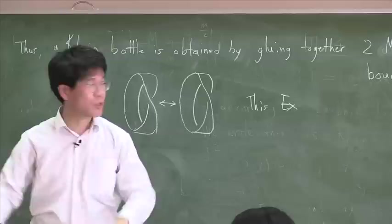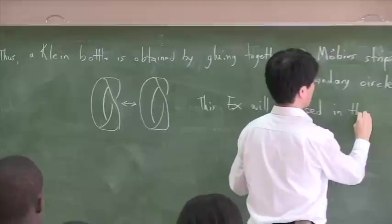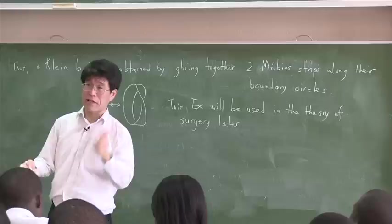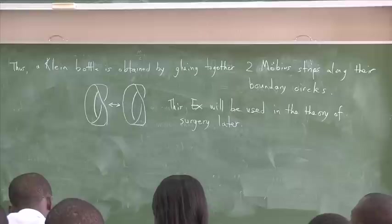This example, the fact that Möbius strip together gives you a Klein bottle, and Klein bottle cut in half becomes two Möbius strips, will be useful, will be used later in the theory of surgery later. By surgery, I don't mean medical surgery, but there is some similarity. You are cutting and pasting and so forth. You are doing all sorts of violence to manifolds. This is enough for today.